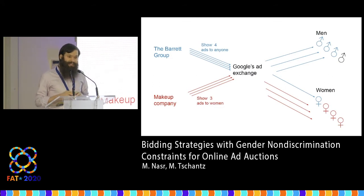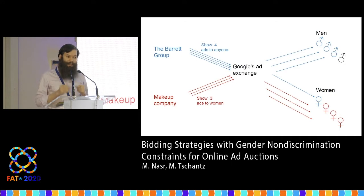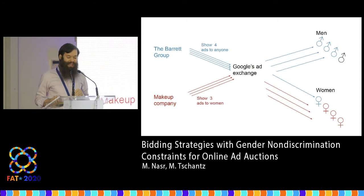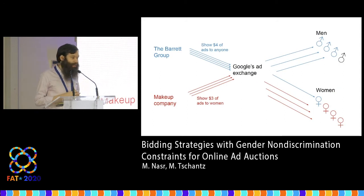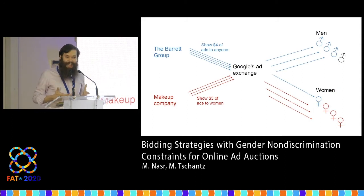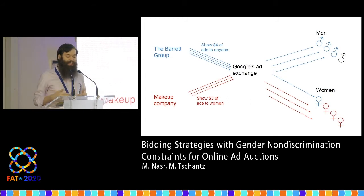The most obvious fix is to have the Barrett group run two simultaneous campaigns, one for men and one for women, set at the same size. The problem is that campaign size is measured in dollars, not the number of ad slots won. So the Barrett group would need to predict ahead of time how much larger to make the budget for the female ad campaign, given that they're more expensive — and this might not be possible.